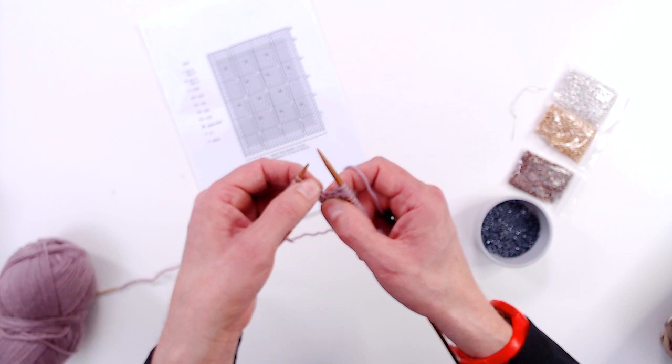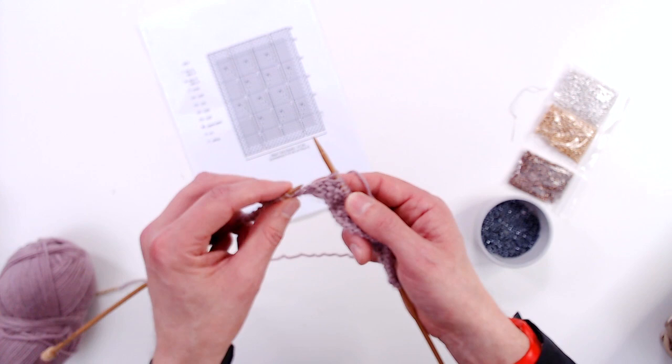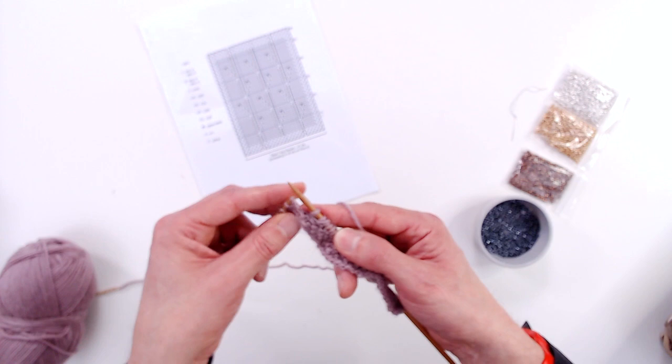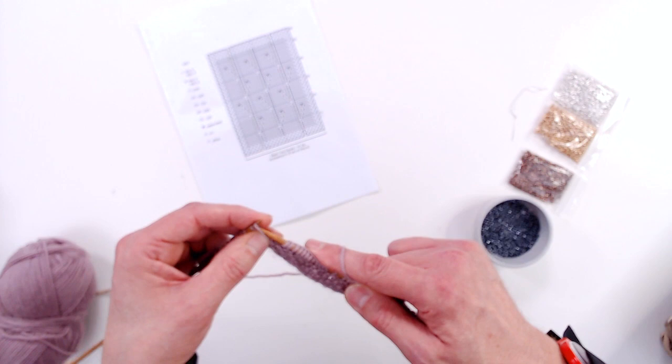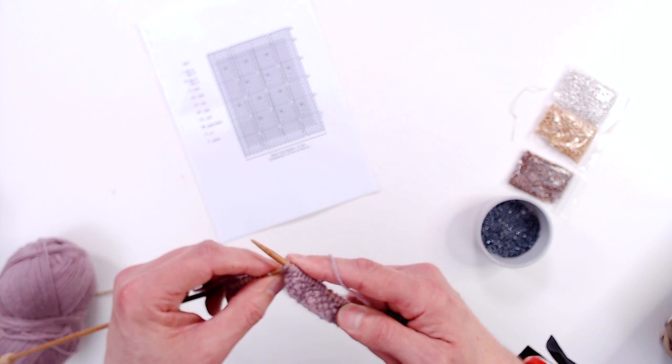So again to make a stitch, if you can find the running thread that runs between the stitch on your left hand needle and right hand needle, just go under that thread from front to back. And to make the stitch, just knit into the back of that thread.